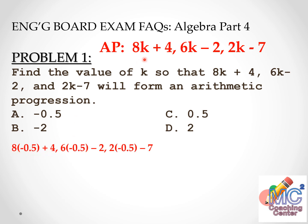For letter A, k is negative 0.5. So 8k plus 4: 8 times negative 0.5 is negative 4, plus 4 equals 0. Then 6k minus 2: 6 times negative 0.5 is negative 3, minus 2 equals negative 5. Then 2k minus 7: 2 times negative 0.5 minus 7 is 1 minus 7, that is negative 6.